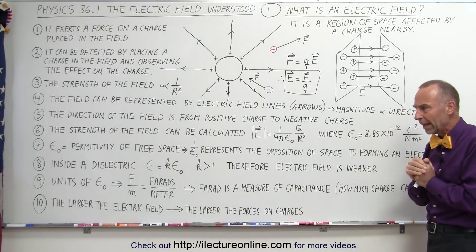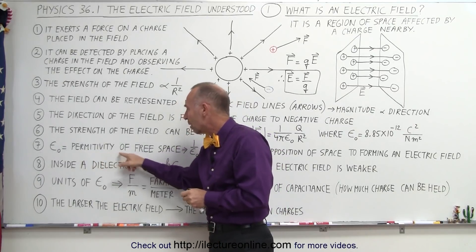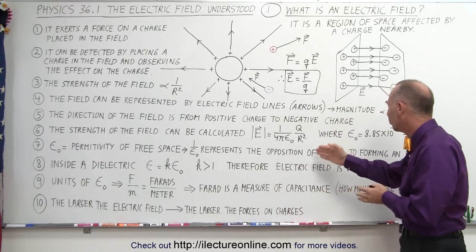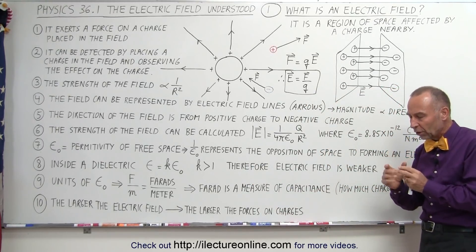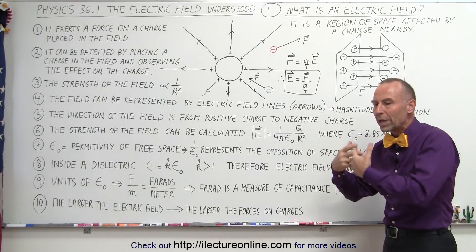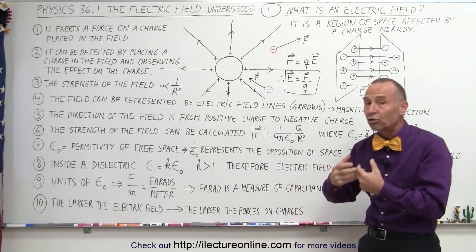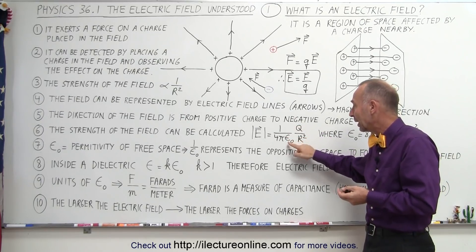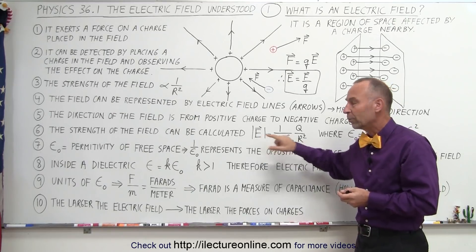Epsilon sub naught is called the permittivity of free space. 1 over that represents the opposition of space to forming an electric field. The greater epsilon sub naught is, the more difficult it is to form the electric field and the weaker the electric field becomes. The smaller epsilon sub naught is, the stronger the electric field becomes — and that is evident by realizing that epsilon sub naught is in the denominator: make it bigger, the field becomes smaller; make it smaller, the field becomes bigger.